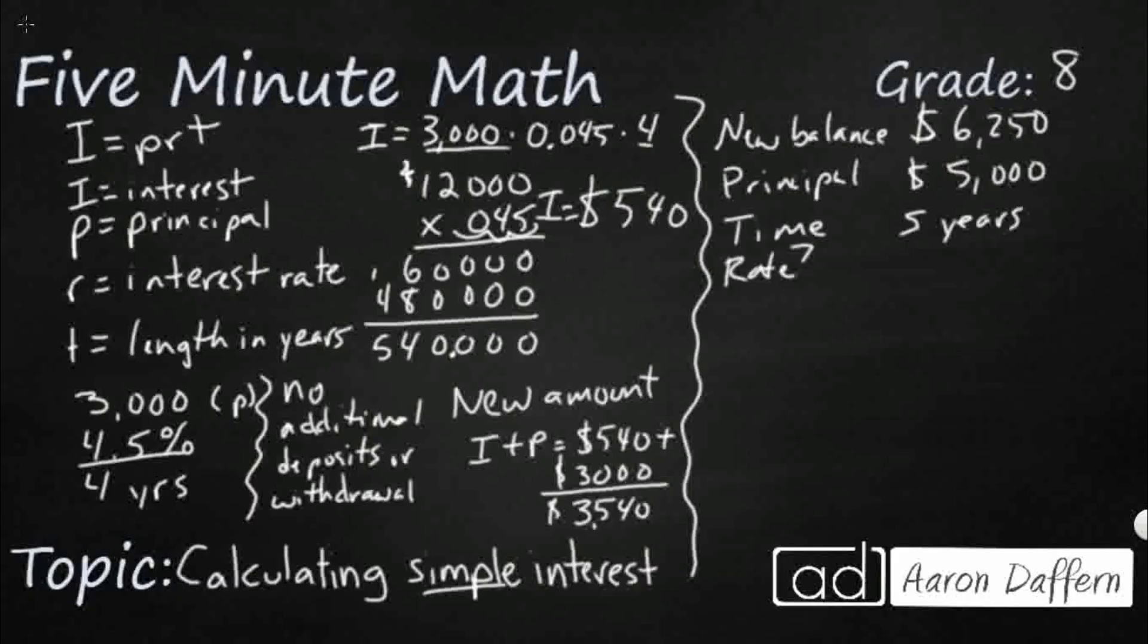Well, first we need to set up our equation: I equals PRT. Our interest is the new balance minus the principal. So if you take those two away, the interest is 1,250. That equals the principal, 5,000, times the rate, which is our unknown, times the time, which is five.